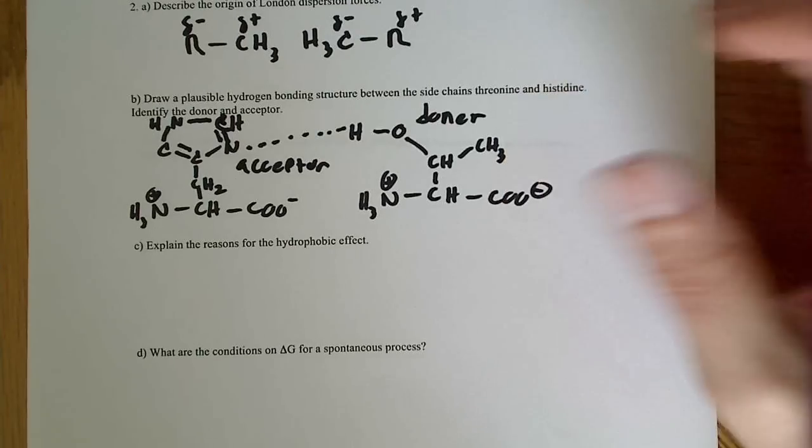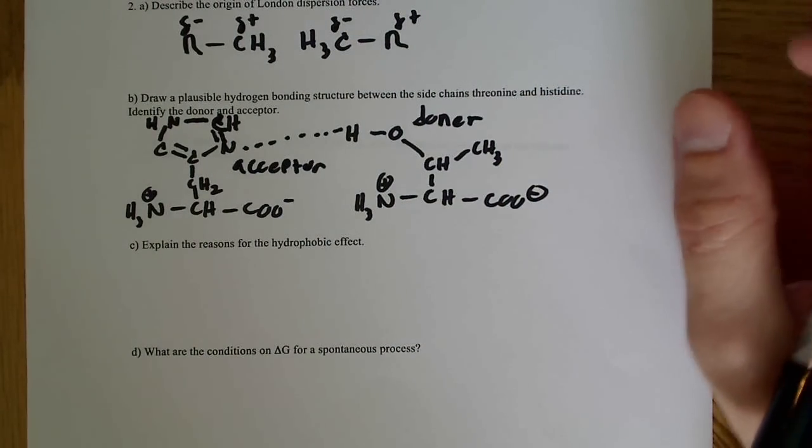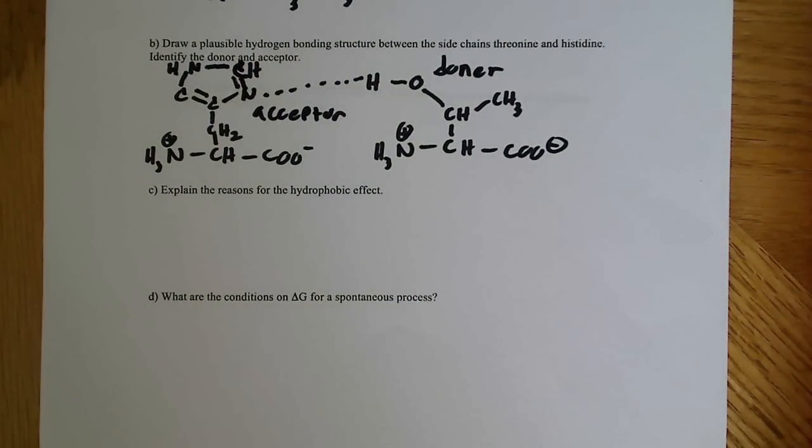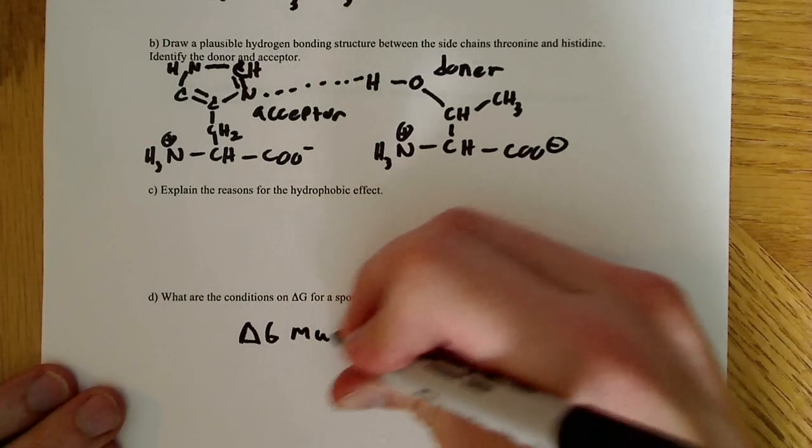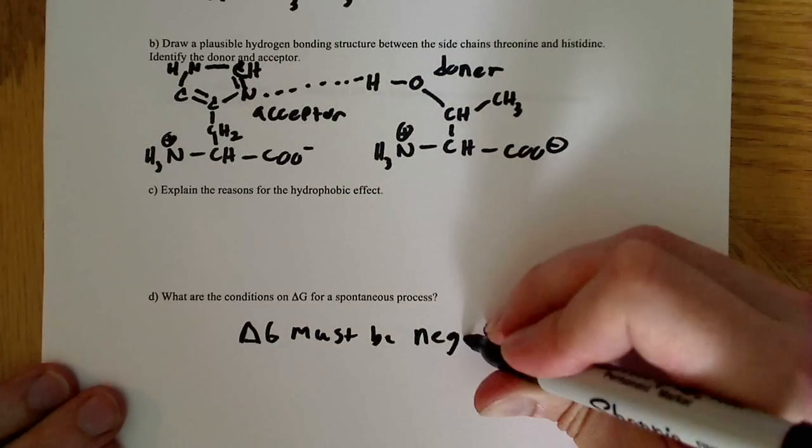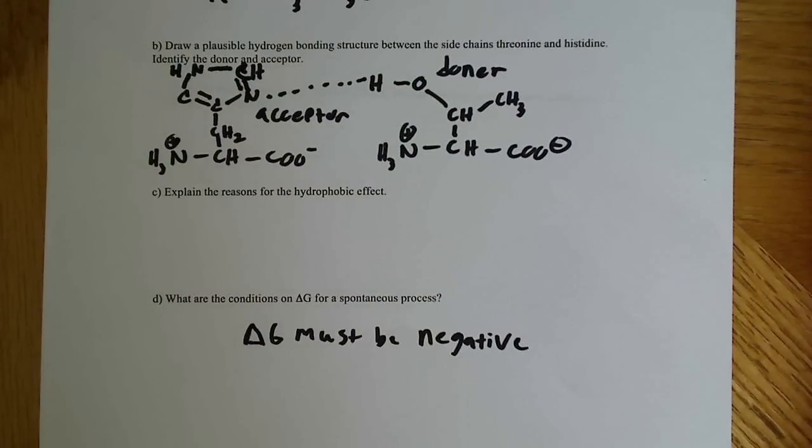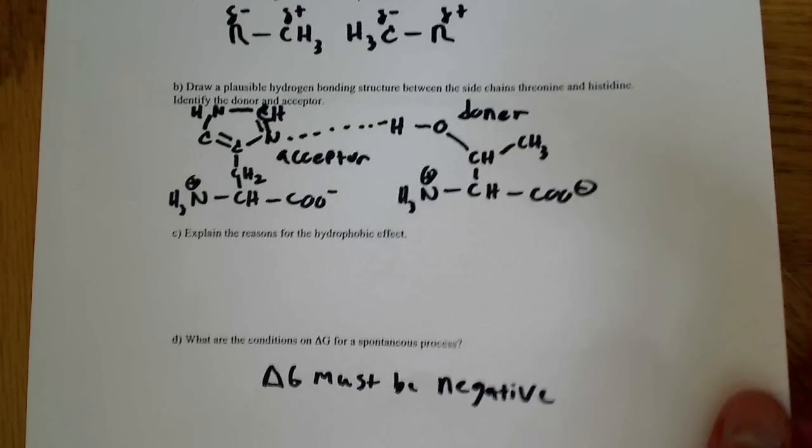The next question is about the hydrophobic effect, and I explained that in another video, so I'm not going to do that one here. The bottom one says what are the conditions for delta G to be spontaneous, essentially. Well, that's not really all that hard. I don't know how much your particular professor will want out of this question, you can go a little bit more in depth. But I would just say that delta G must be negative. So a negative delta G indicates a spontaneous reaction. If it's positive, it's not spontaneous. It's just kind of a very basic concept. And we'll do more on Gibbs free energy later on. It becomes more important later in the course.